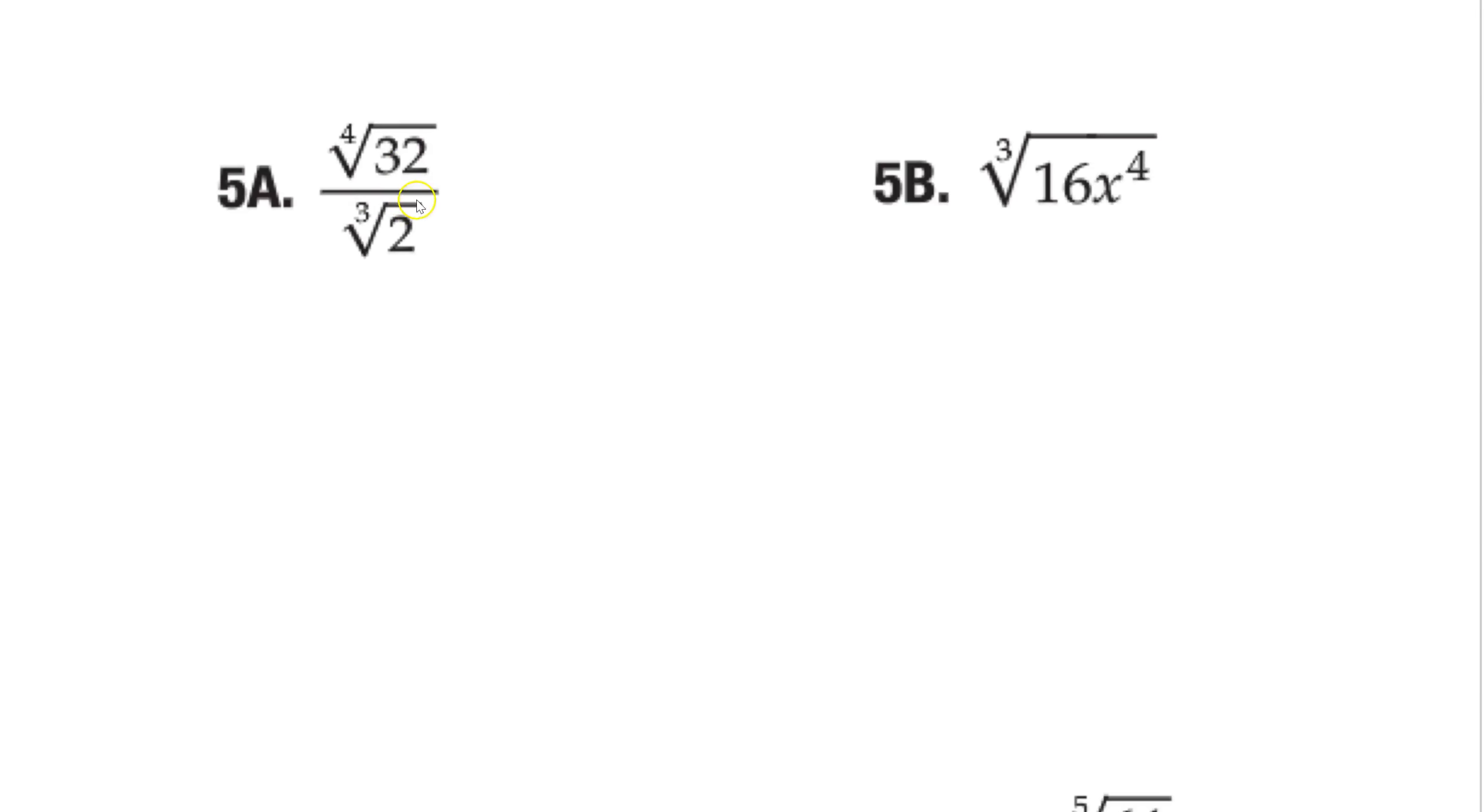Okay. So a couple things here. This one, I want to point out that you cannot just divide them, right? These are different roots. Like, if we rewrote it, it would be 32 to the 1 fourth over 2 to the 1 third. So you can't simplify because the powers are different. So with here, I really can't do much. What you can do, we're going to get into this later, is you can rewrite 32. This is a little preview to the next chapter. What you could do is you could rewrite this. It's the same base. 32 is the same thing as saying 2 to the 5th.